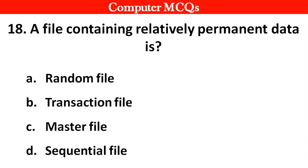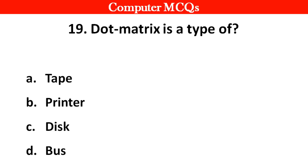A file containing relatively permanent data is: option A random file, B transaction file, C master file, D sequential file. Right answer is option C, master file.